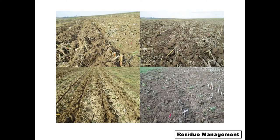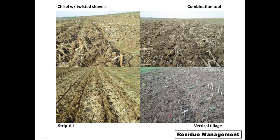Here's another example looking visually at different tillage systems. They include a chisel plow with twisted shovels, a combination tool — which is becoming very popular, especially in areas more prone to compaction — and strip-till, which is a great system where you prepare your seedbed in strips but in between you have an area similar to a no-till scenario. There's also a vertical tillage example where there was not a lot of residue on that field to begin with, but you can see it does a pretty good job of burying residue — in this case perhaps a little too well, as we have less than 30% residue left.